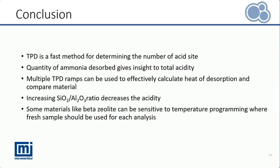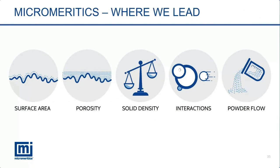This brings us to the conclusion of this webinar. The TPD is a fast method for determining the number of acid sites. The quantity of ammonia desorbed from an ammonia TPD gives insight into the total acidity of a zeolite. Multiple TPD ramps can be used effectively to calculate the heat of desorption and compare materials. Increasing silica to alumina ratio decreases the acidity of a zeolite, as reflected in the quantity of ammonia desorbed. Finally, some materials like beta zeolite can be very sensitive to temperature programming, so fresh samples should be used for each analysis for accurate measurement. Thank you for your attention, and now the floor is open for questions.